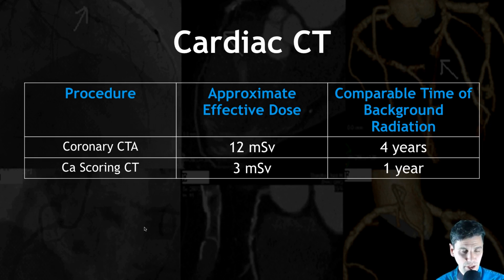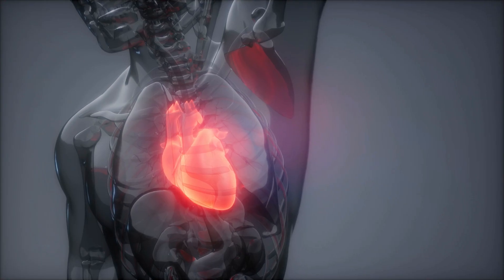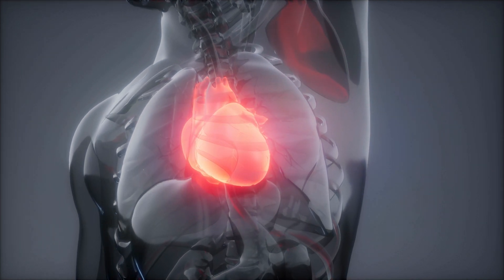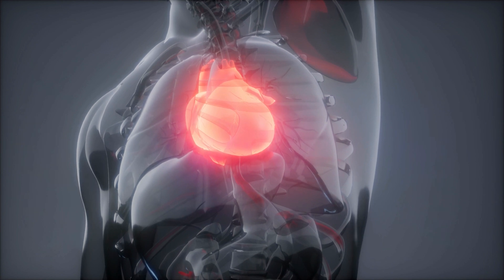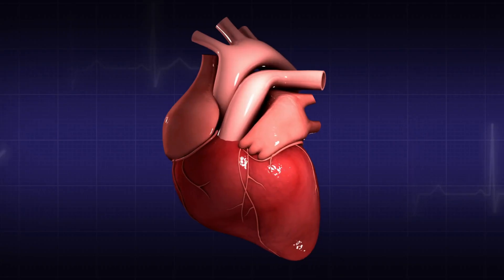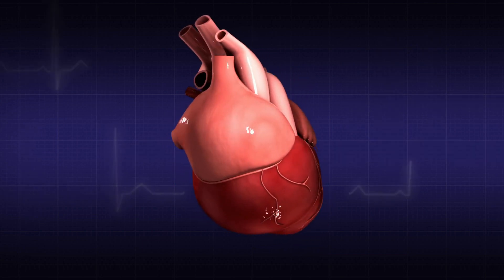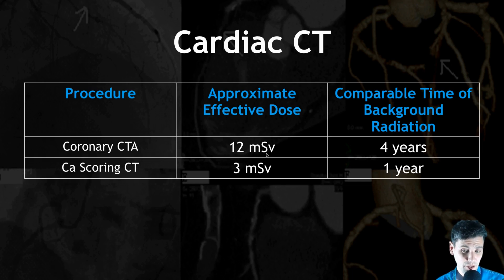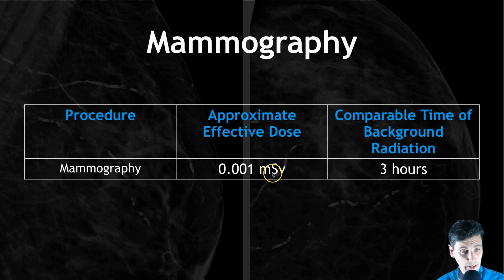For cardiac CT, these numbers are a little old because radiation doses really depend on the equipment and type of acquisition. On modern scanners, doses are much lower — for someone of medium to small body habitus, below one millisievert cardiac CT exams are not uncommon on state-of-the-art scanners. Using relatively higher legacy doses, coronary CT is about 12 millisieverts — comparable to four years of background radiation. A calcium scoring exam would be about 3 millisieverts, or slightly lower on a modern scanner — about one year of background radiation.